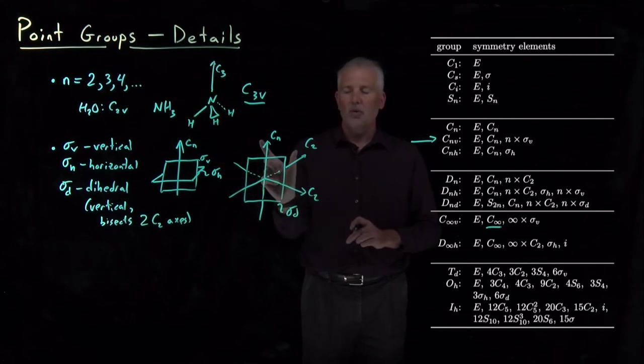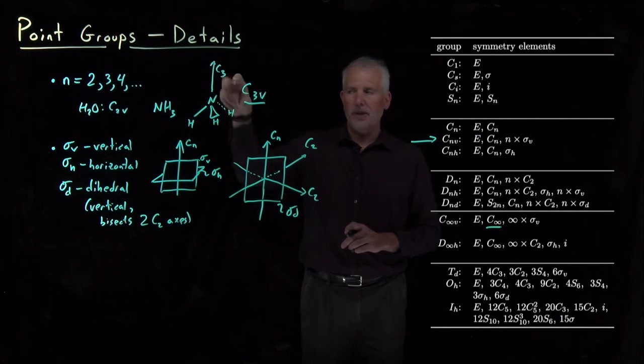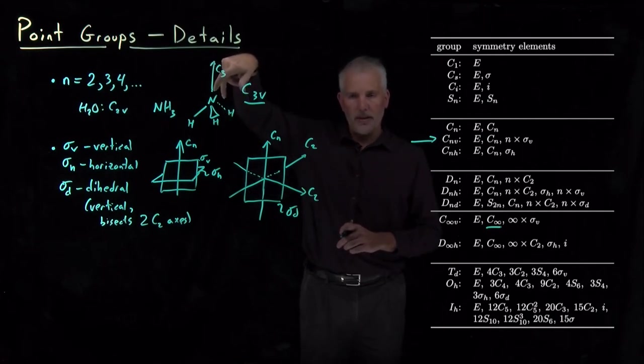A C2 axis means rotate halfway around and you don't change the molecule. A C3 axis means rotate a third of the way around and you don't change the molecule.